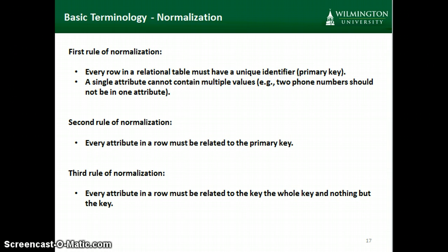The second rule of normalization is each attribute in a row must be related to the primary key. So basically, when we decide which attributes go into which entities, we put those attributes together that are related — specifically related to the primary key. The third rule of normalization is every attribute in a row must be related to the key, the whole key, and nothing but the key.